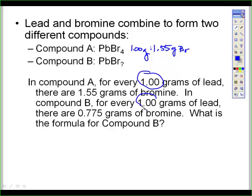In compound B, for every one gram of lead, I see something that's the same. There are 0.775 grams of bromine. And I want to know the formula for compound B. Excellent.